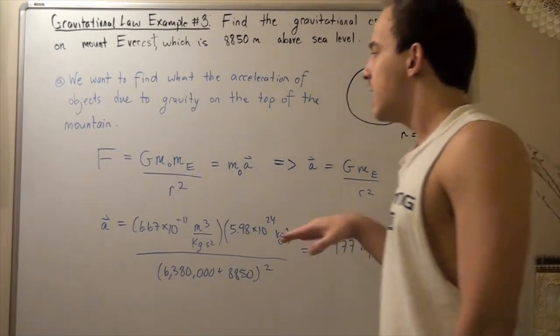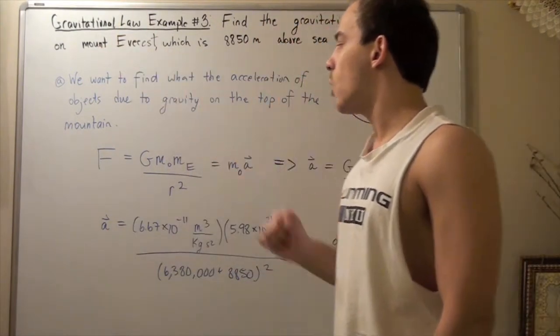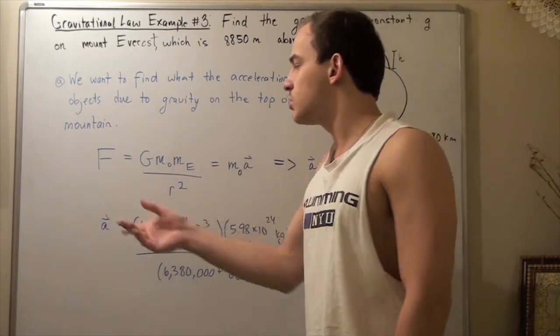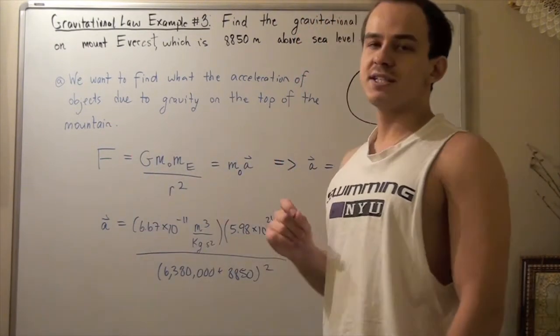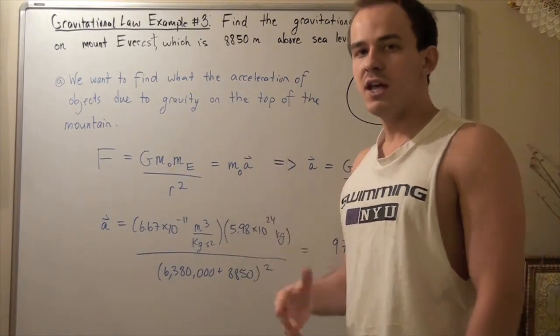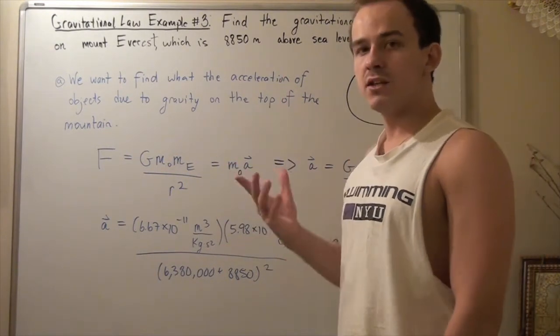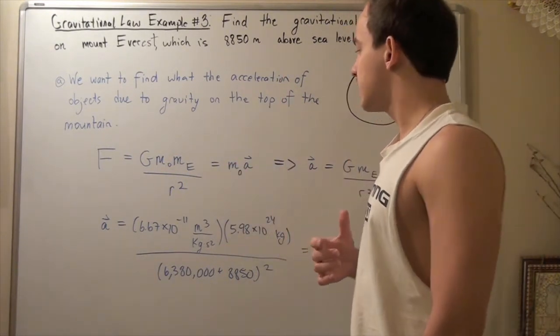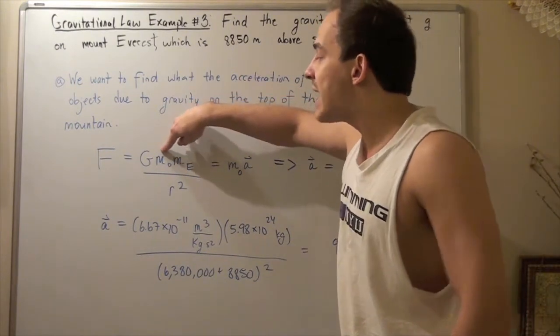We begin by looking at our universal law of gravitation. Force is equal to gravitational constant, 6.67 times 10 to negative 11 meters cubed divided by kilograms times seconds squared.